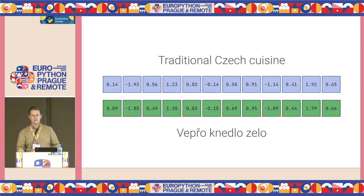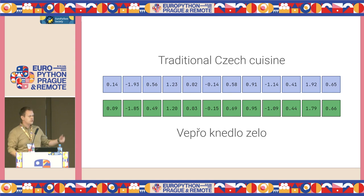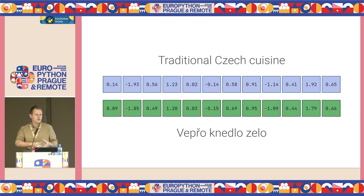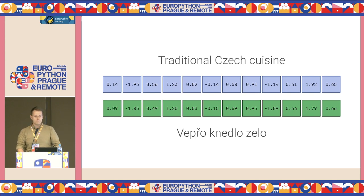Traditional text should be represented by a single vector. The most useful property of these vectors is that if you have two different texts representing a similar idea or concept, they should be close to each other in semantic space. For example, two traditional Czech dishes should have a similar representation, with high cosine similarity, because they represent something similar in the real world.